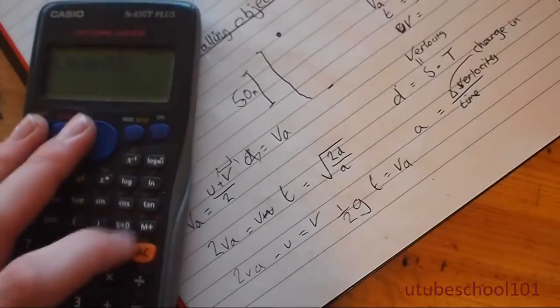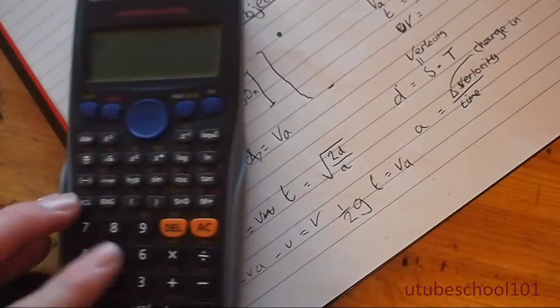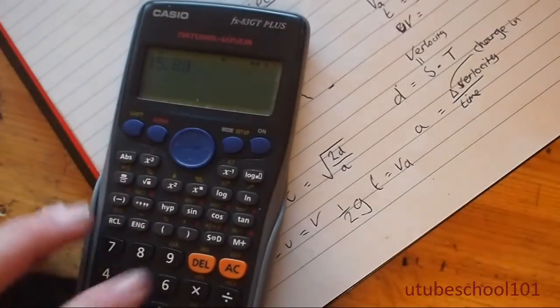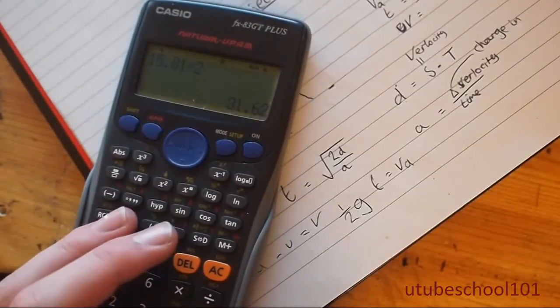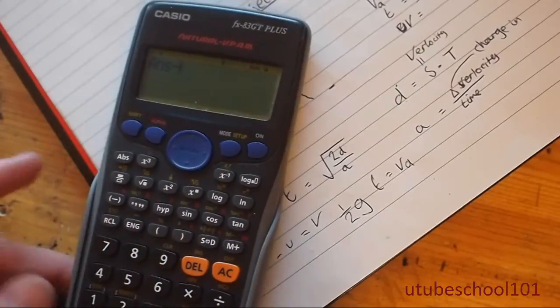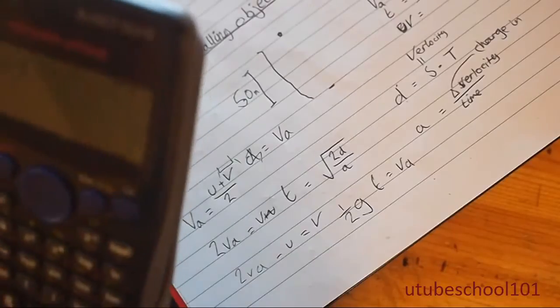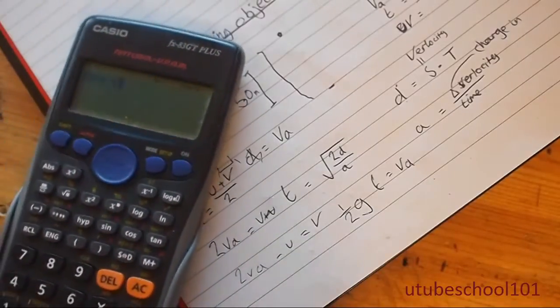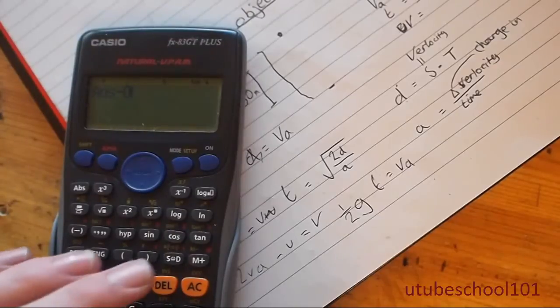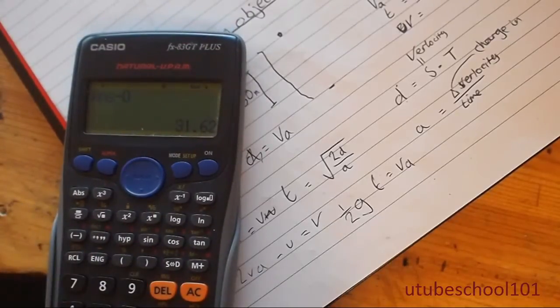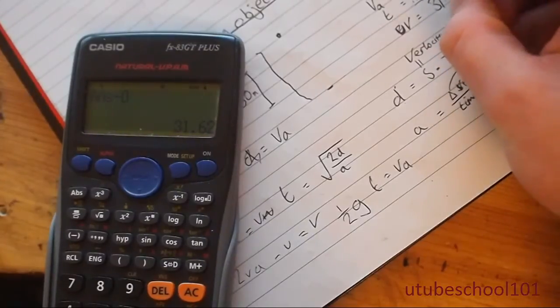The average velocity was 15.81 times by 2. And then if I take that away from the starting velocity, which in this case was 0 because he just let go—he didn't physically chuck the ball down, he just dropped it—the final velocity is going to be 31.62 meters per second.